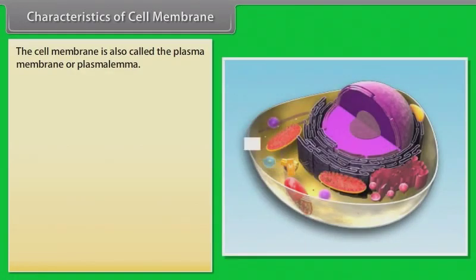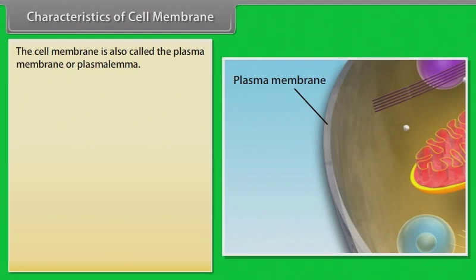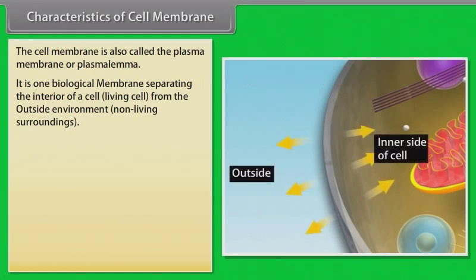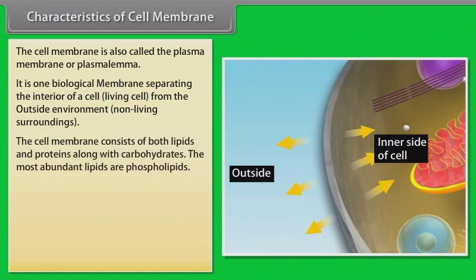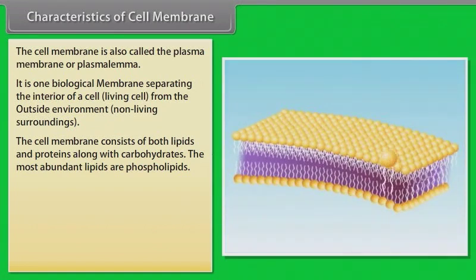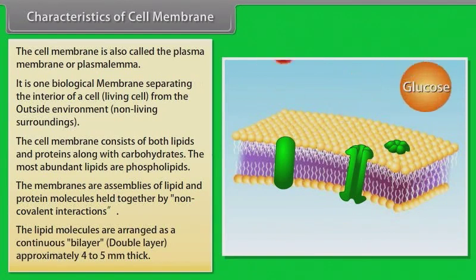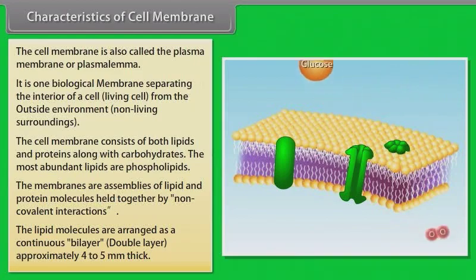Characteristics of cell membrane: The cell membrane is also called the plasma membrane or plasmalemma. It is a biological membrane separating the interior of a cell — the living cell — from the outside environment, the non-living surroundings. The cell membrane consists of both lipids and proteins along with carbohydrates. The most abundant lipids are phospholipids. The membranes are assemblies of lipid and protein molecules held together by non-covalent interactions. The lipid molecules are arranged as a continuous bilayer, approximately 4 to 5 nm thick.